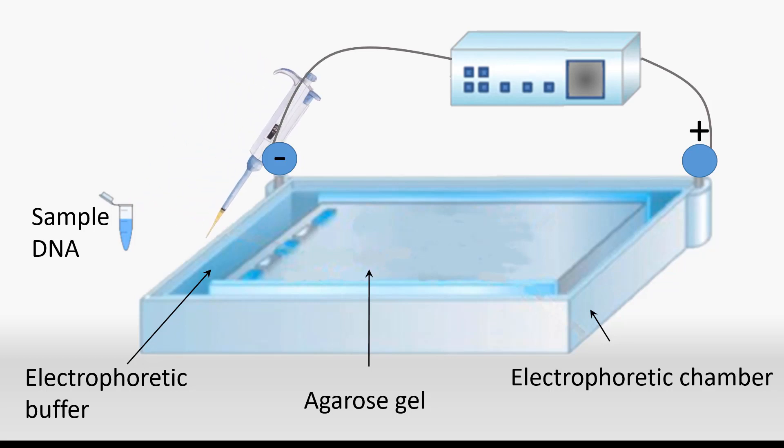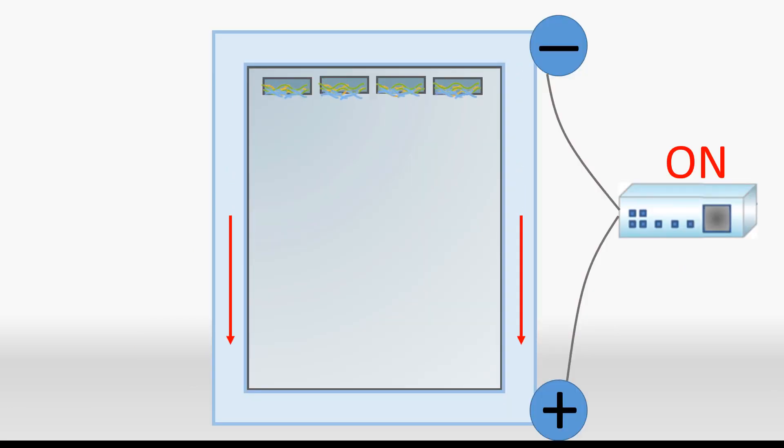The samples are loaded into the wells. At this point, the gel is ready to run and the power supply is turned on. With the current running through the buffer, the DNA begins to migrate through the gel.